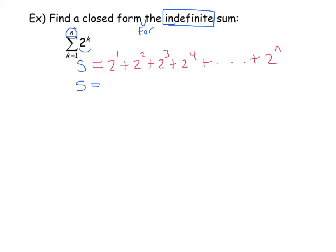So S is equal to, multiplying by 2 again, I'm going to multiply by 2. 2S equals, it's going to shift everything over: 2 squared plus 2 to the third plus 2 to the fourth plus 2 to the n. If you multiply 2 to the n times 2, it becomes 2 to the n plus 1.